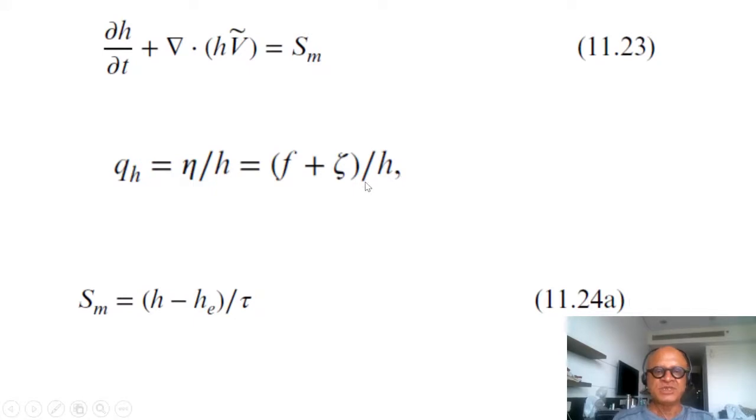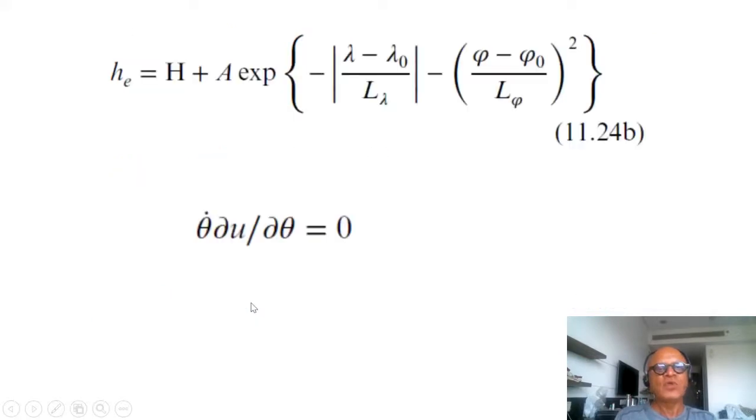And the mass source in this case can be just written as h minus h e over tau, the time scale, where h e is related to the total depth plus a forcing amplitude and a function of longitude and latitude with prescribed scales in each direction l lambda and l phi. It's just a model to make certain points.